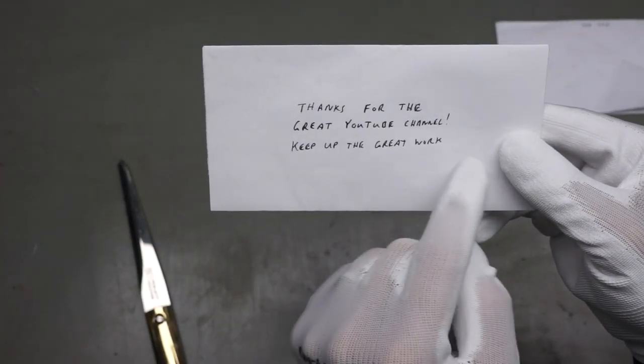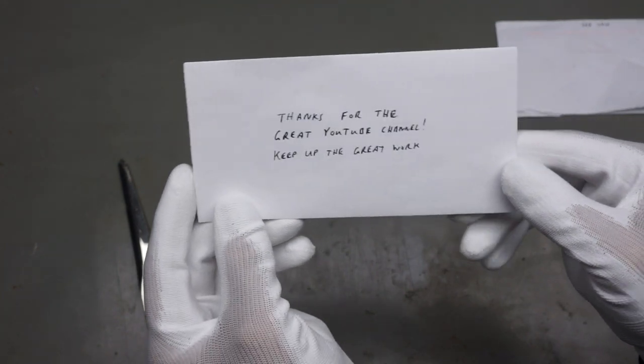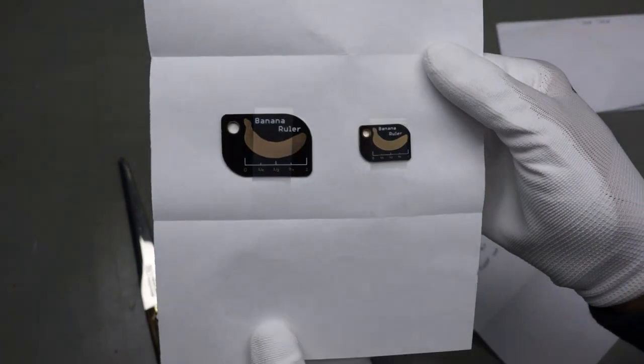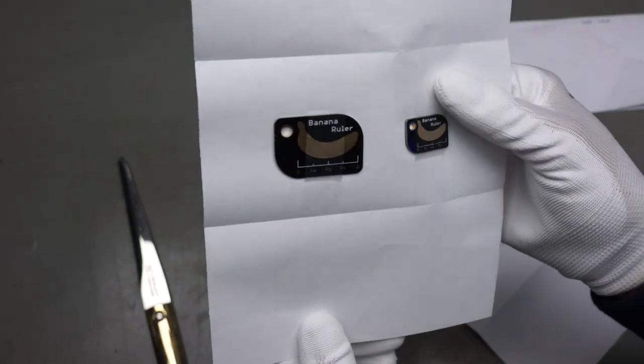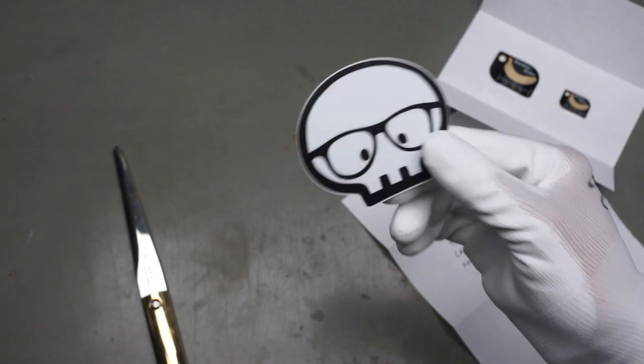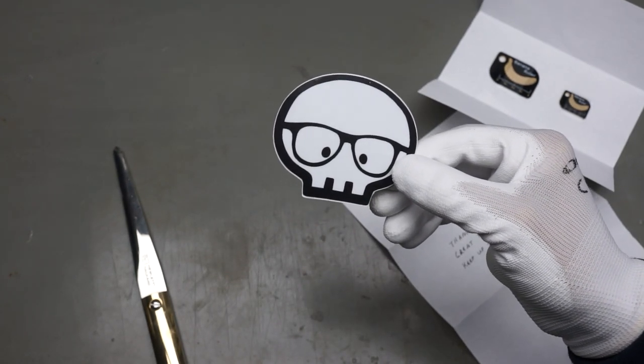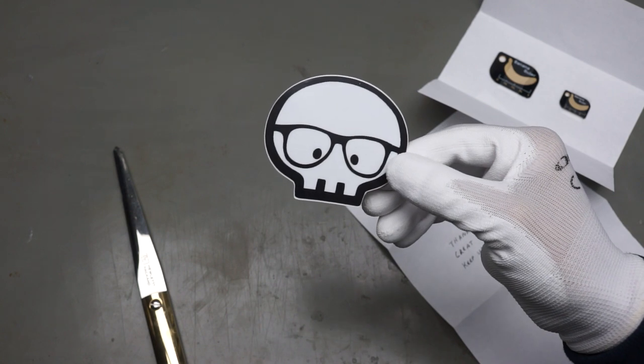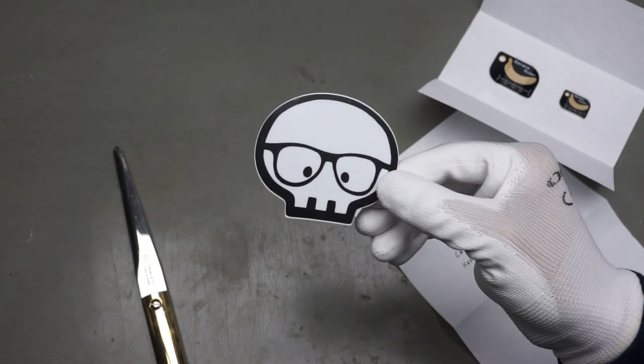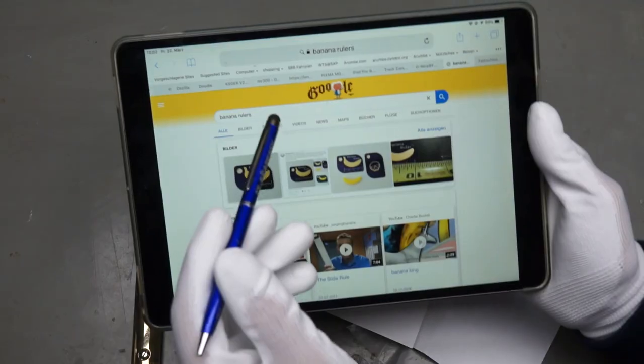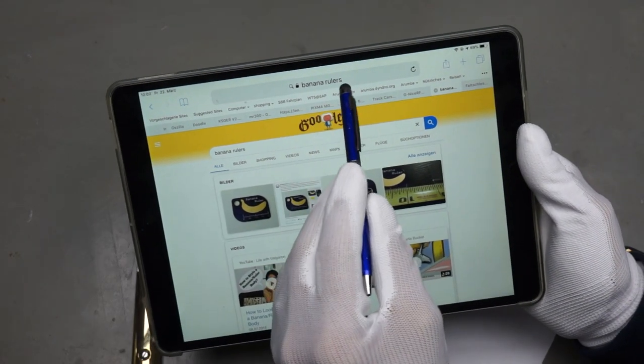Thanks for the great YouTube channel. Keep up the great work. Banana rulers. And this is the logo of John. I think he calls himself John because it's written J-O-N and not like John. But I'm not sure. I'm not Canadian. And if we search banana rulers, we really get it.